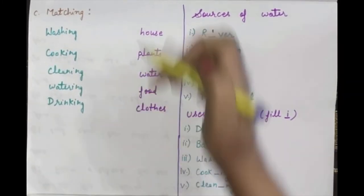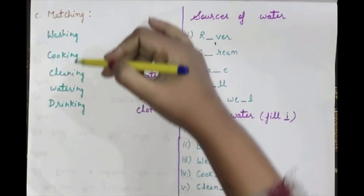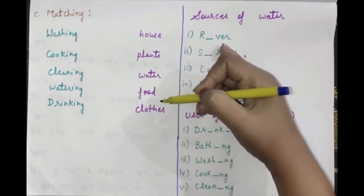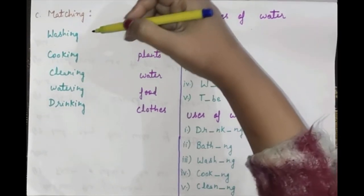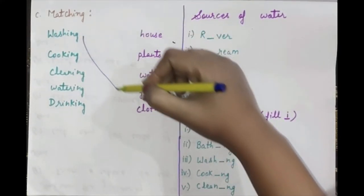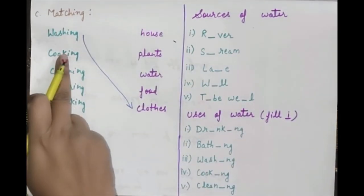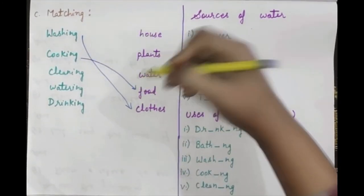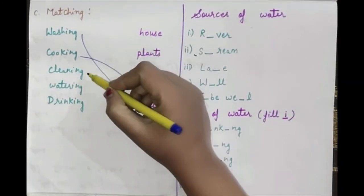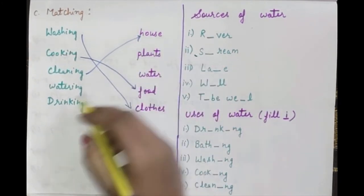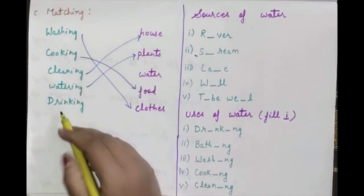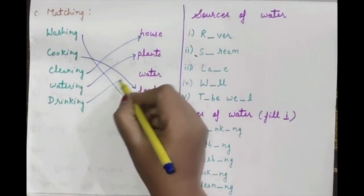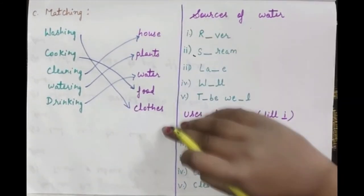Next comes the matching. I have written uses here. Let's match it. Washing - clothes. Cooking - food. Cleaning - house. Watering - plants. Drinking - water. This way we can match it.